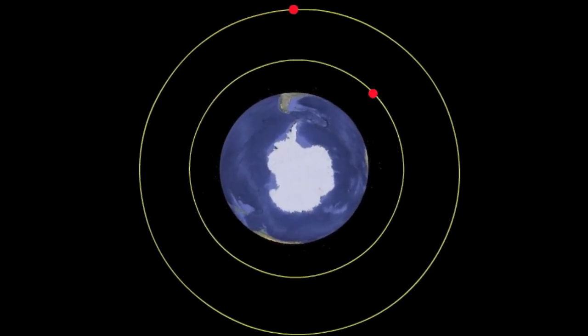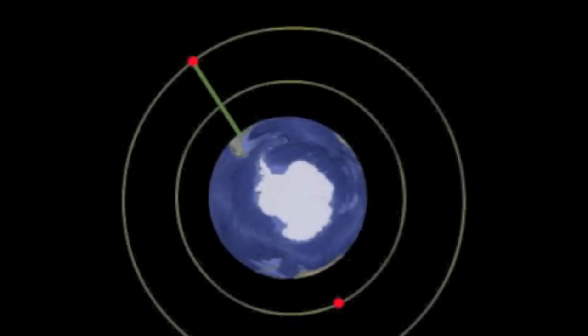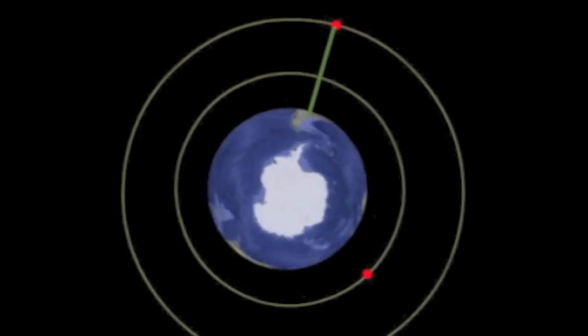The satellite follows the Earth round, always staying over exactly the same point. This geostationary orbit is essential for communication satellites and for global positioning satellites.